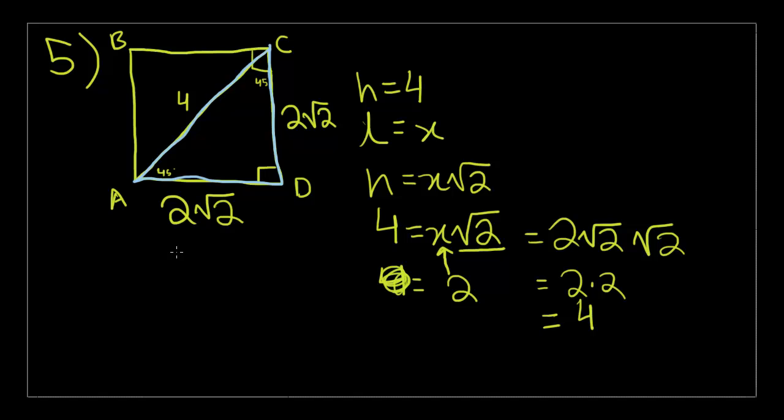Now we need to find the area of the square. That's just 2 root 2 whole squared. If you square 2, you get 4. If you square root 2, you get 2. So that is equal to 8, and that's choice A.